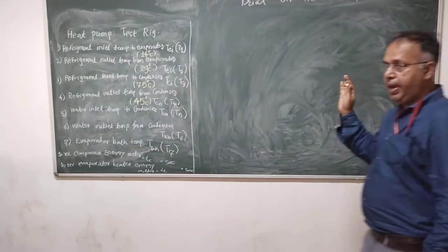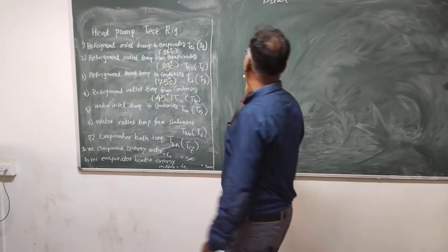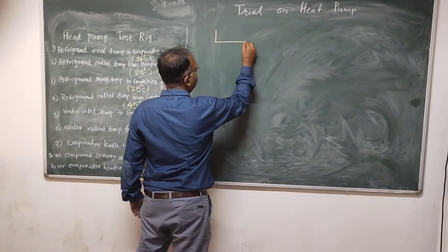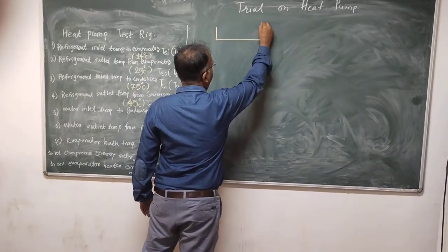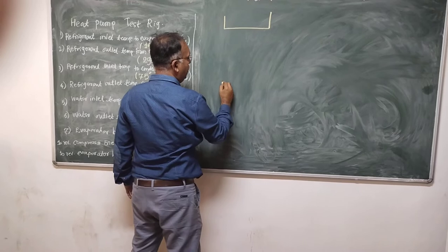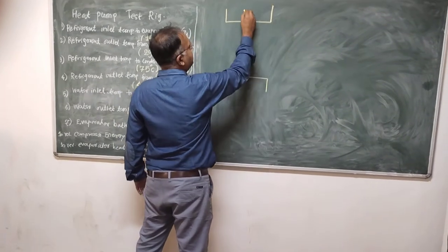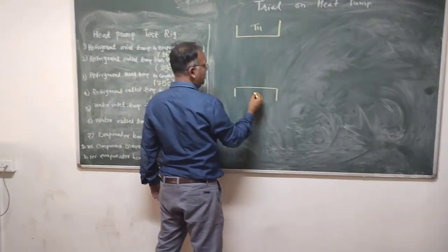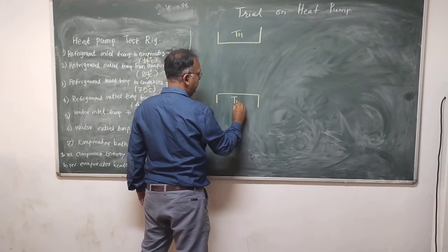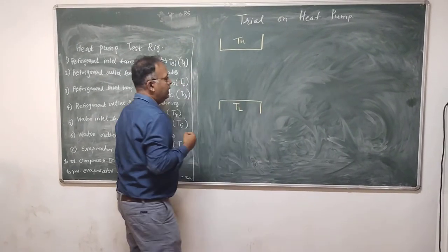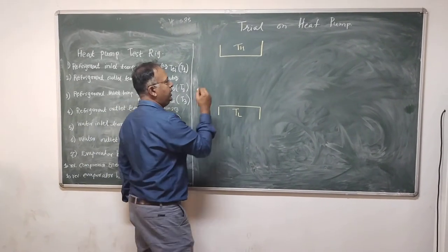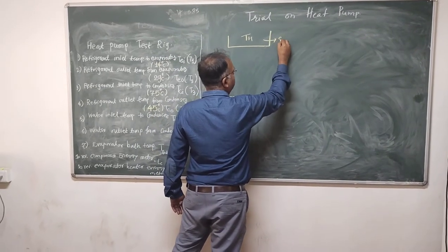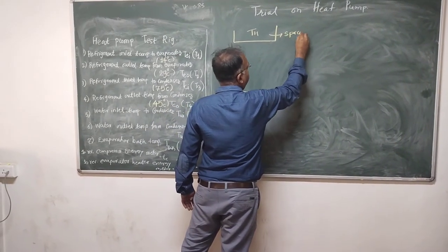What I am going to draw is a schematic of a heat pump. We understand it by drawing two reservoirs. One is a higher temperature reservoir, which is TH, and there is a lower temperature reservoir, which is TL. The higher temperature reservoir TH is the space which is to be heated.